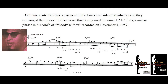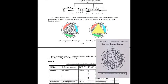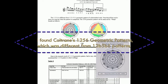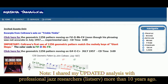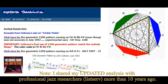Then I found Coltrane's 1-2-5-6 geometric pattern, which was different from the 1, 2, flat-5, flat-6 patterns that other scholars mentioned. That was my new discovery. Coltrane used this 1-2-5-6 geometric pattern. I shared my updated analysis with professional jazz researchers more than 10 years ago. Please do not steal from me — your professor or teacher may be in the research community and knows if you stole. You might get kicked out of your school.